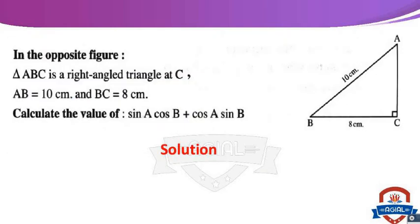In the opposite figure, triangle ABC is a right-angled triangle at C. AB equals 10 cm and BC equals 8 cm. Calculate the value of sine A · cosine B plus cosine A · sine B. Since triangle ABC is right-angled at C, measure of angle A plus measure of angle B equals 90 degrees — angle A and angle B are complementary angles. Therefore, sine A equals cosine B and cosine A equals sine B.